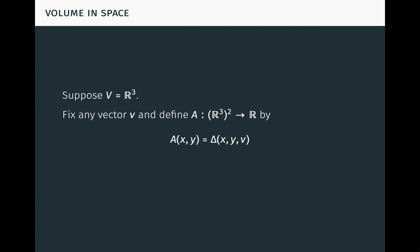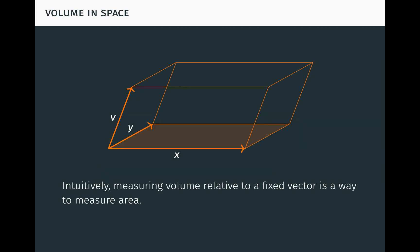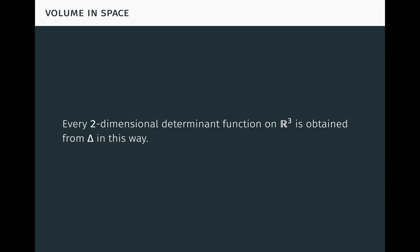To make things simpler, suppose V is R3. Fix any vector v and define A by A equals delta of (·, ·, v). Then A is a two-dimensional determinant function on R3, since it is obviously multilinear and alternating. This tells us that measuring volume relative to a fixed vector provides a way to measure area. Fix any vector v, and let x and y vary in any plane through the origin. To determine the area of the parallelogram determined by x and y, compute the volume of the parallelepiped determined by x, y, and v. Every two-dimensional determinant function on R3 is obtained from delta in this way — intuitively, this is the only way to measure area in space.